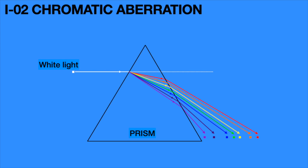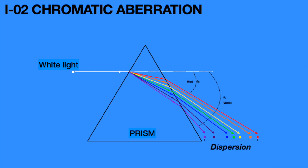In this figure, we can observe that the deviation produced by the violet ray, delta V, is greater than the deviation produced by the red light ray, delta R. This analogy is useful for the future explanation of chromatic aberration. This phenomenon is called dispersion.